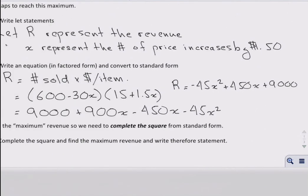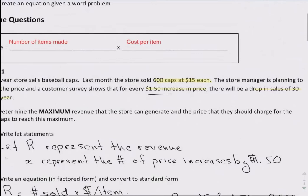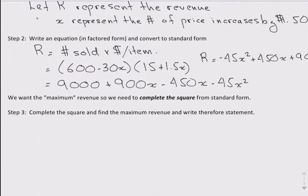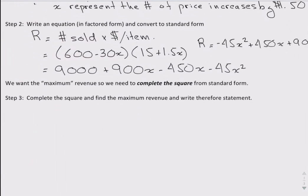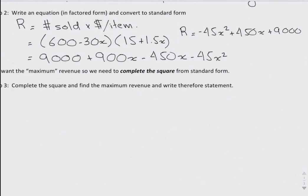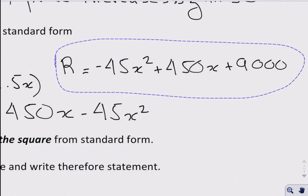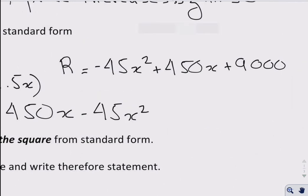So I just collected like terms, brought them together, and there's my revenue function. So now we want to find the maximum, and this involves, oops, completing the square. So let's complete the square of this long revenue equation here. So to save myself some time, let me just cut this, copy it,